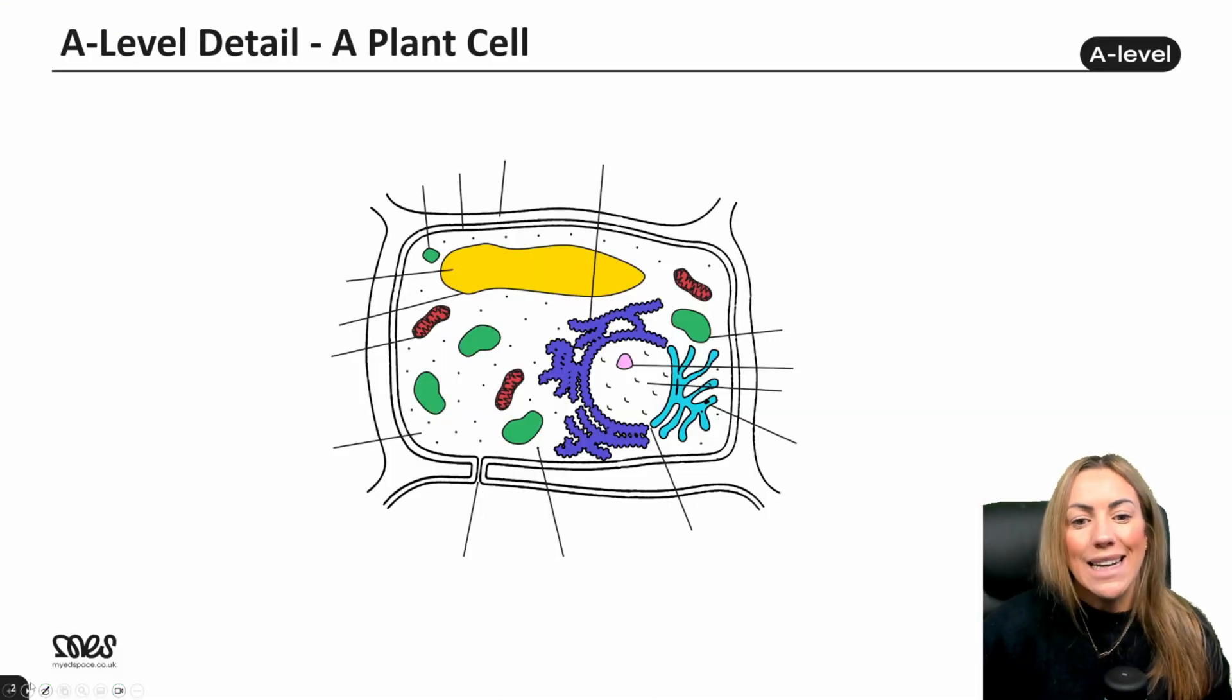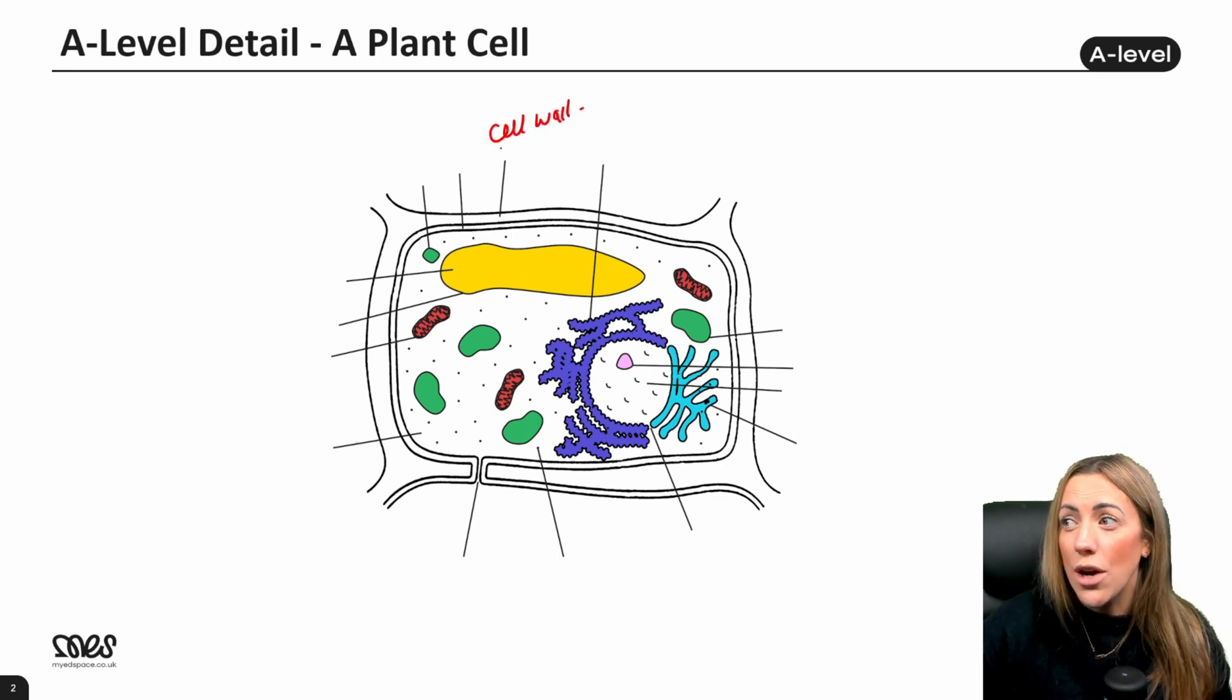Let's start by seeing if we can label a plant cell in A-level detail. So let's start at the top here. Here we've got the cell wall, which we should know from GCSE is made of cellulose and that's on the outside of the plant cell.